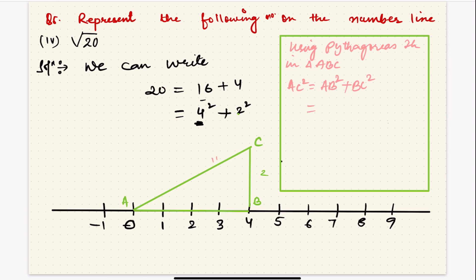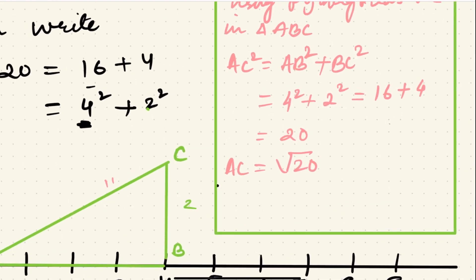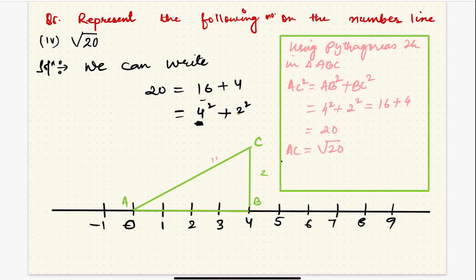So AC². AB is how much? 4², plus BC is how much? 2². 4² is 16, 2² is 4. 16 + 4 = 20. But I want to find out AC. AC will be square root, will become √20. So how much is AC? Root over 20. So AC is √20.